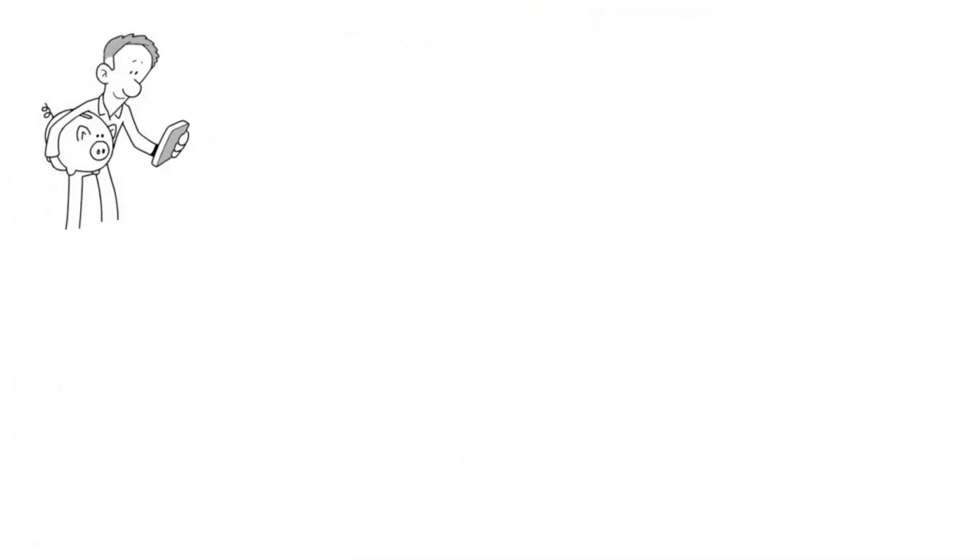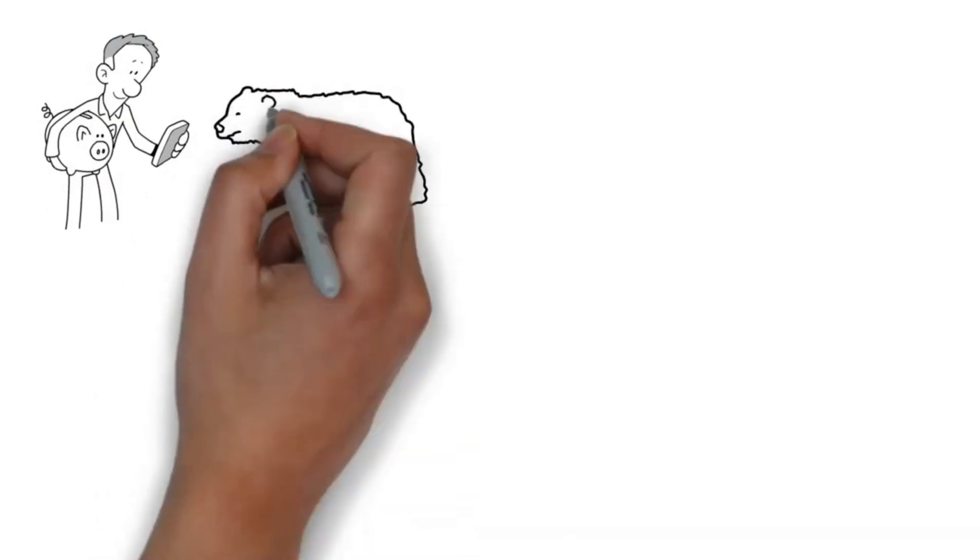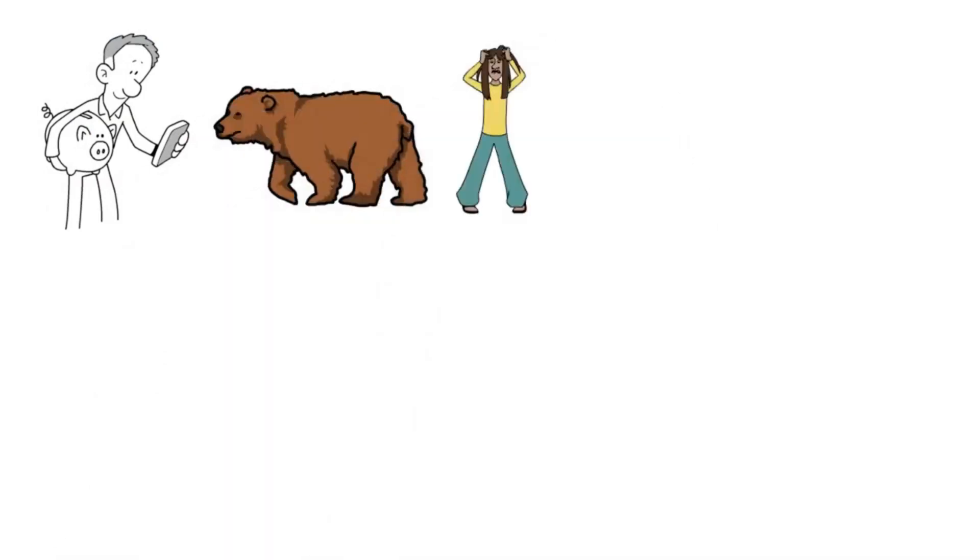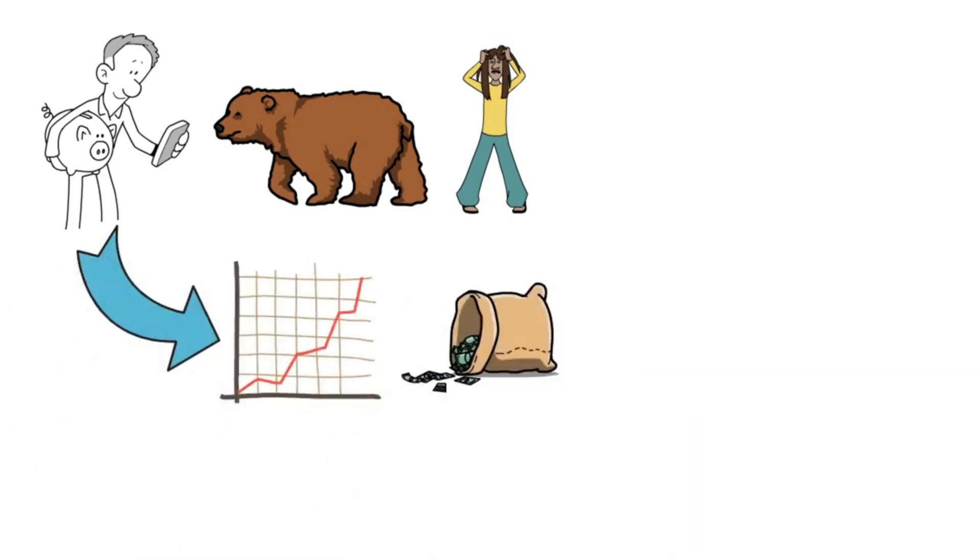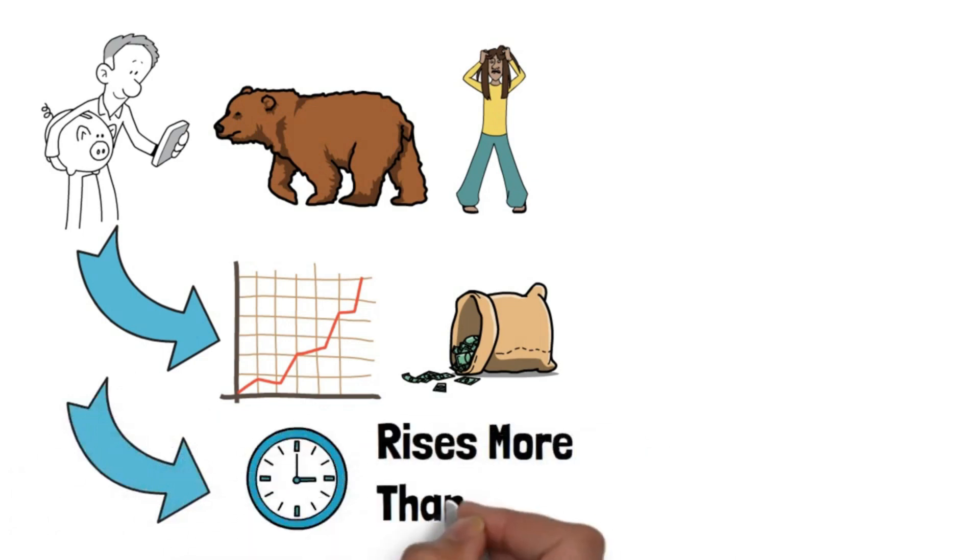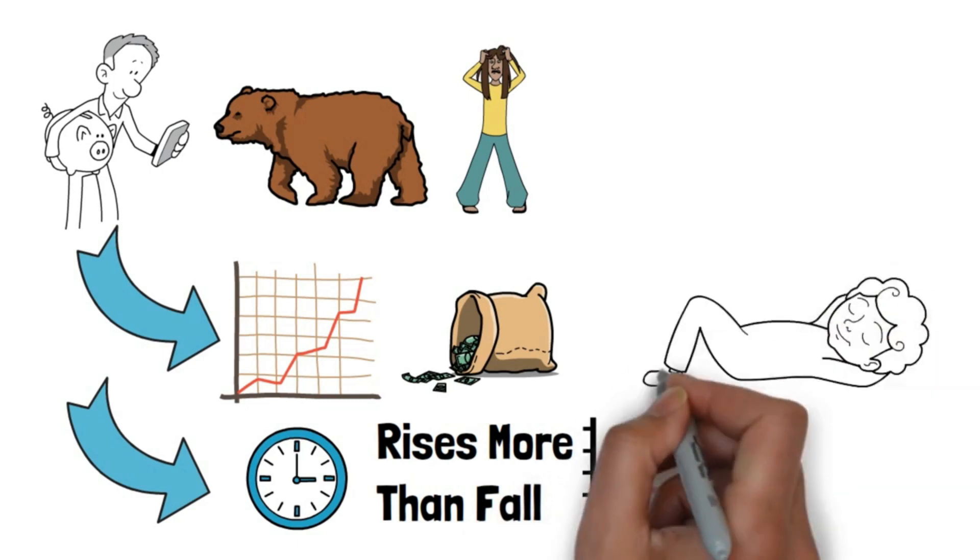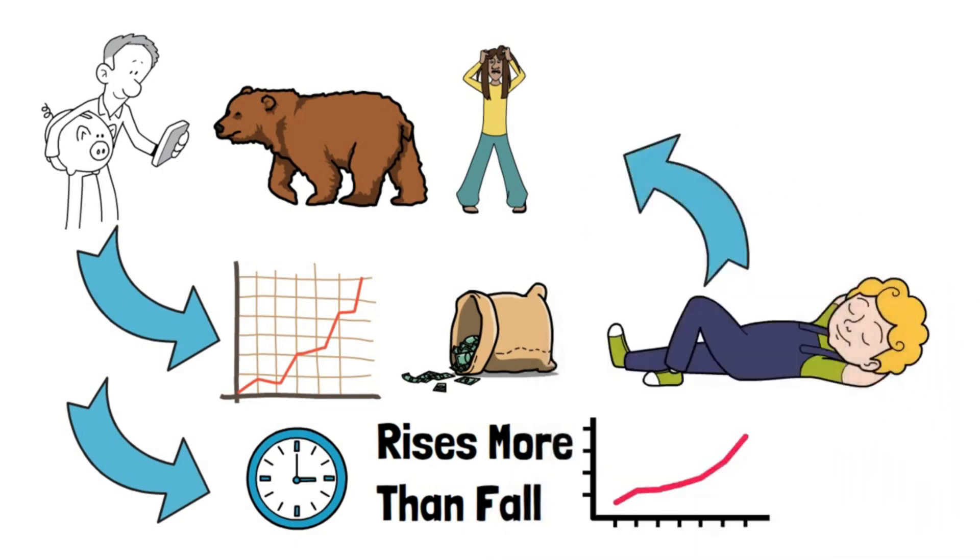SIP investors, as we have seen, can endure bear markets better rather than being terrified. Furthermore, bull markets allow them to earn compound interest on all of their wealth-generating routes. Furthermore, because SIP investors are long-term investors and the market rises more than it falls, as shown in the graph below, they can be relaxed and secure in their plan, while others are scared or greedy.